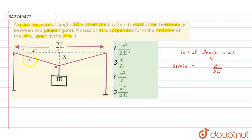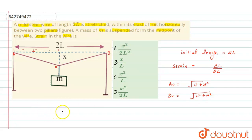Let the midpoint be O and one end be A. By the Pythagorean theorem, the distance AO equals √(L² + x²). Similarly, the distance OB also equals √(L² + x²). Therefore, the extended total length L' equals AO + OB, which gives L' = 2√(L² + x²).